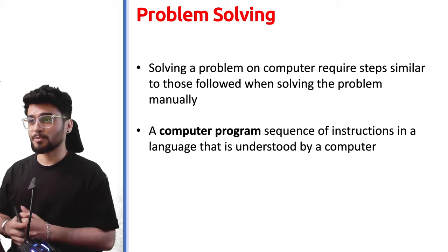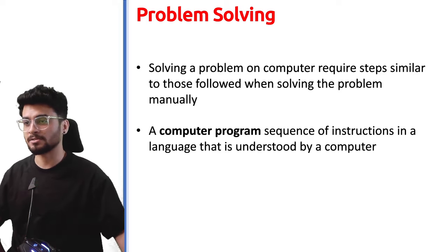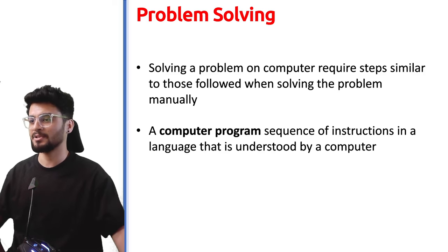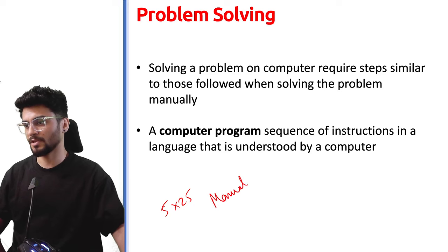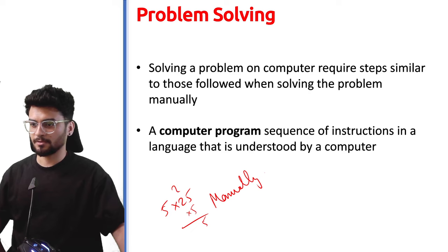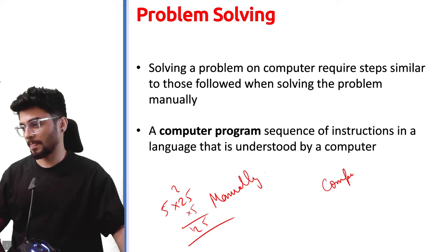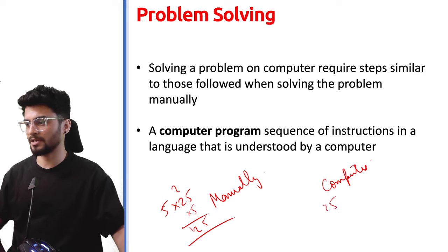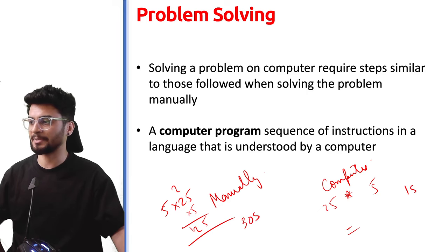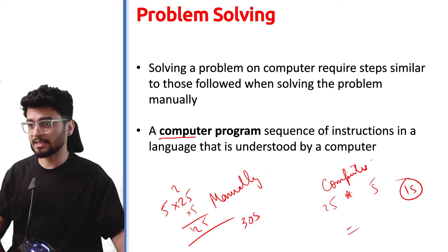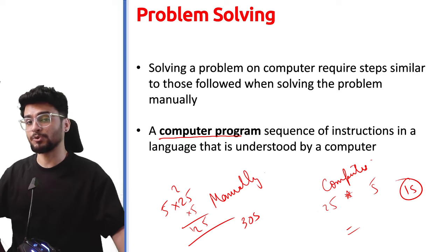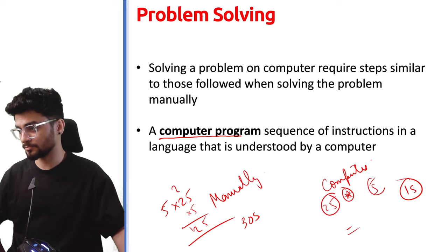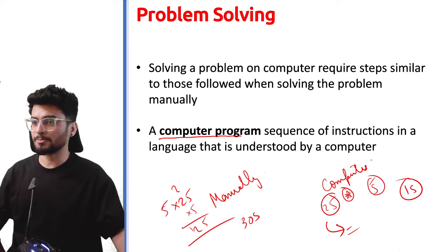Solving problems using a computer or an electronic gadget is not much different from doing it manually. For example, if I want to find 5 into 25, if I'm doing it manually I write it out and solve it, but if I'm using a computer I use the same steps — take the first number, take the second number, tell the computer to multiply, and it gives an answer. A computer program is a set of instructions which you can write in Python, C++, or Java — a language the computer can understand — so that you get the desired answer.